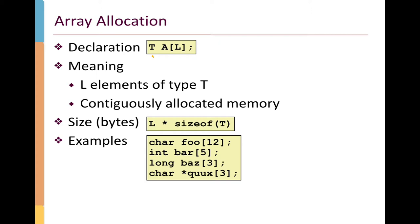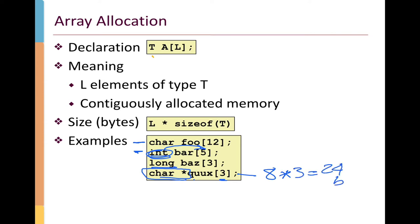We can tell how many bytes are allocated for the entire array using a formula: L, the number of elements, times the size of T, the type of each element. So it's the size of each element times the number of elements, giving us the overall number of bytes. For example, a char array called foo has 12 chars; an int array called bar has five integers. Three longs, and a pointer-to-char array called quucks with three elements — each char star is 8 bytes on a 64-bit machine, times three, giving 24 total bytes.